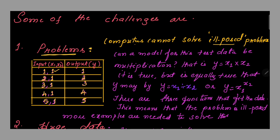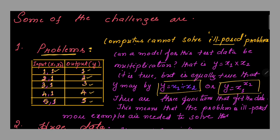When you look at this data, it appears to be multiplication: 1×1=1, 2×1=2, 3×1=3, 4×1=4, 5×1=5. However, there are three functions that fit the data — y = x1 × x2, y = x1 / x2, and y = x1^x2 — which means the problem is ill-posed. More examples are needed to solve this.